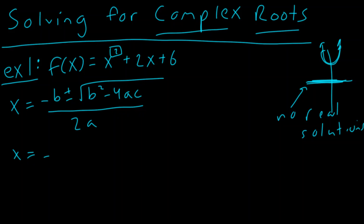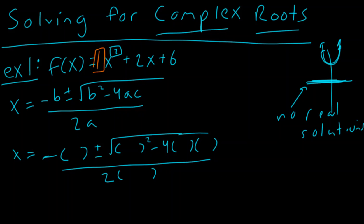So what's our trick? We start by replacing every letter with a set of parentheses. So I write negative parentheses plus or minus the square root of parentheses squared minus 4 parentheses parentheses all over 2 parentheses. Let's go ahead and plug these in. I know my a term here is 1, so everywhere we see an a, we're going to plug in the number 1.